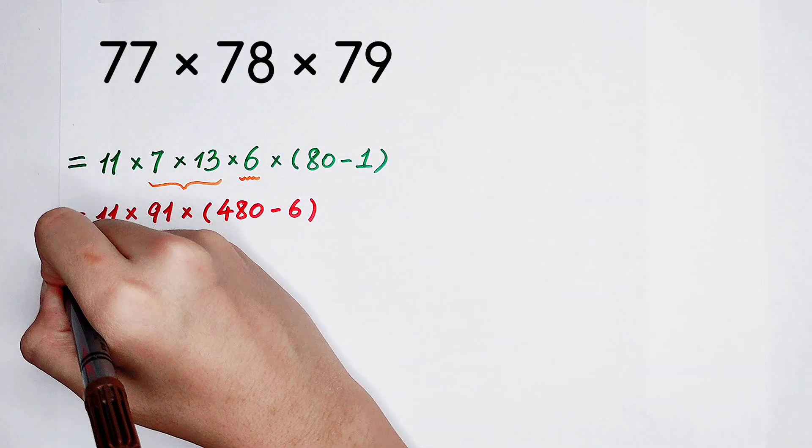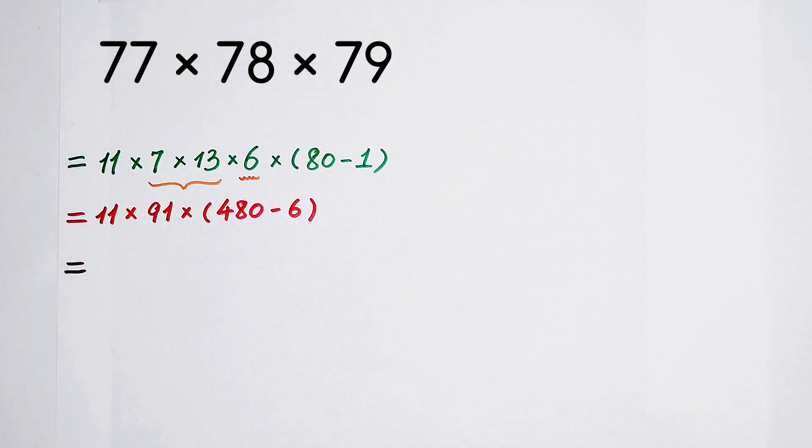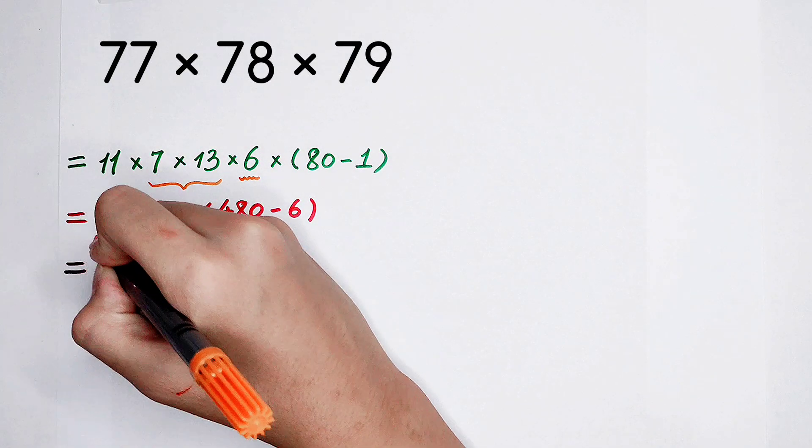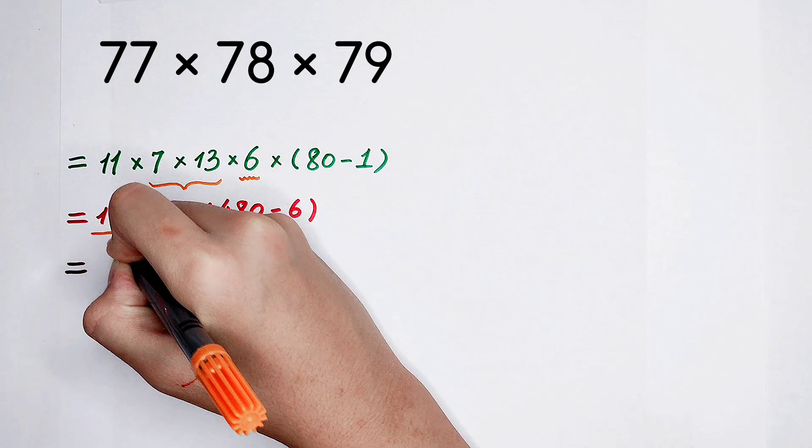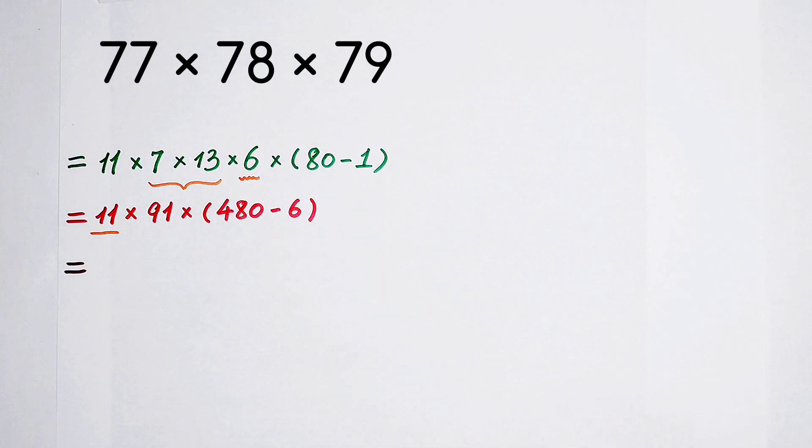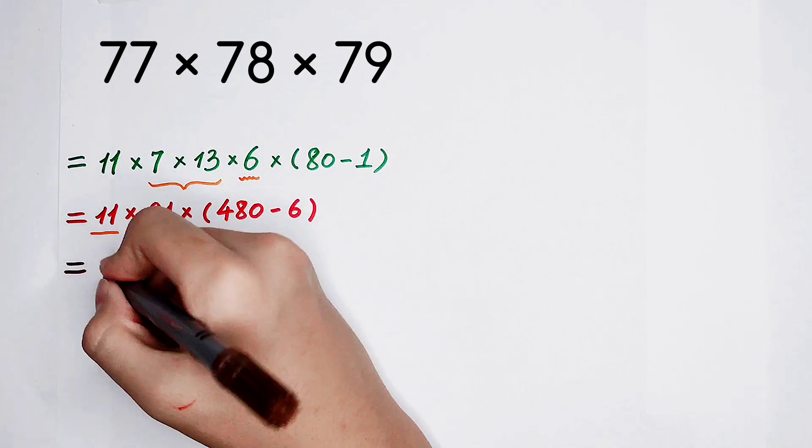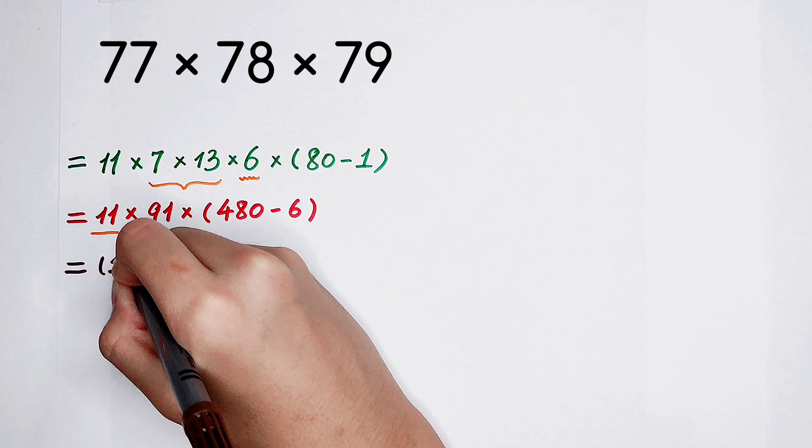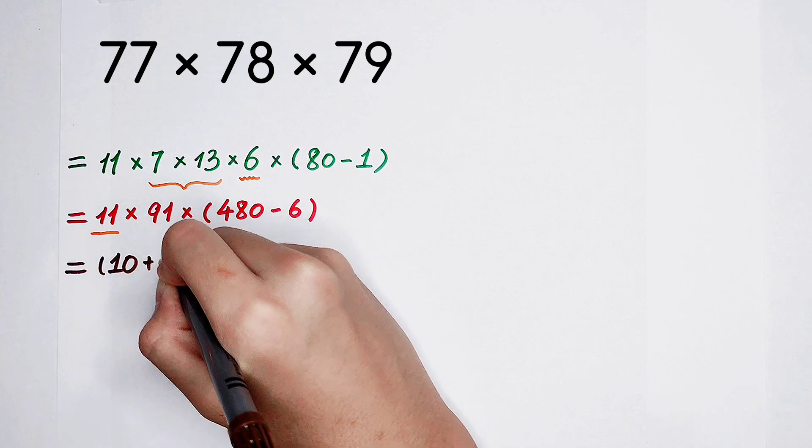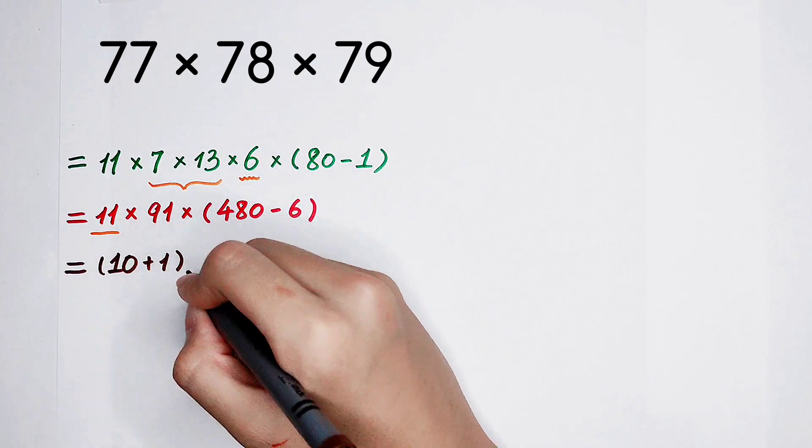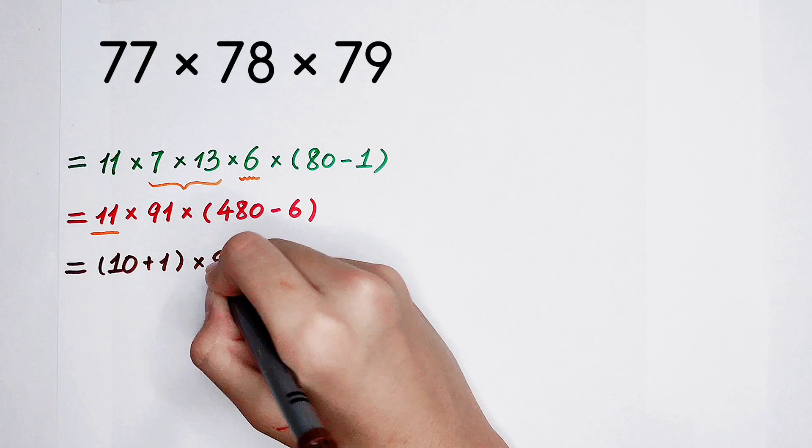The next step, you know how to do it. How to do this? I've told you that 11 is a very good number because it is 10 plus 1. So only because of this, it becomes a nice number. And it can be written as 10 plus 1, and then times 91.